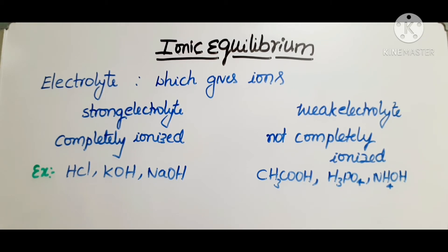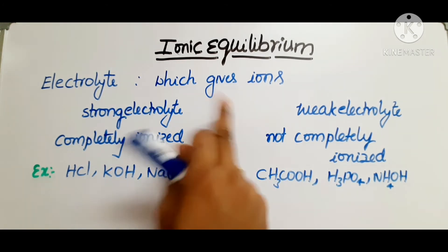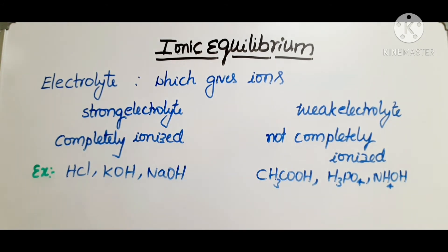What is an electrolyte? Any compound that can give ions — when it is dissolved in some mediums like water or polar mediums — or in molten state or solution state, if it has the capacity to ionize, then we call it an electrolyte.